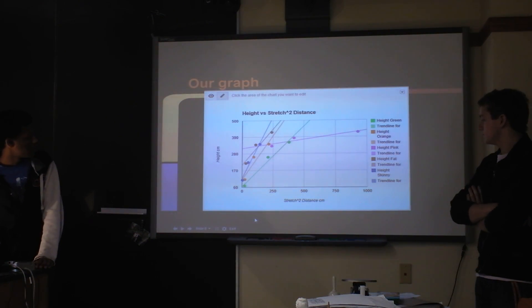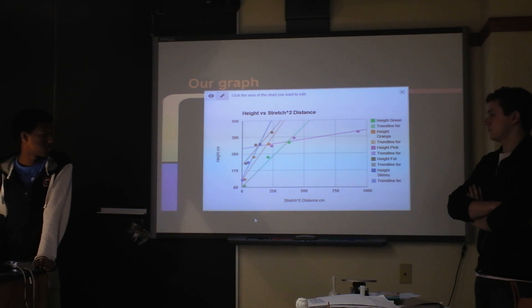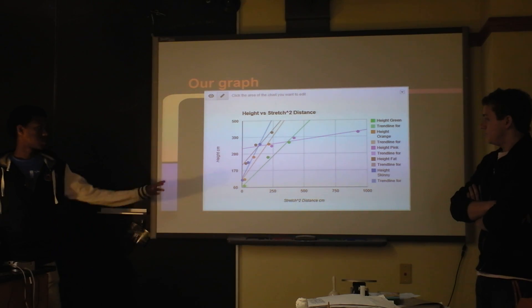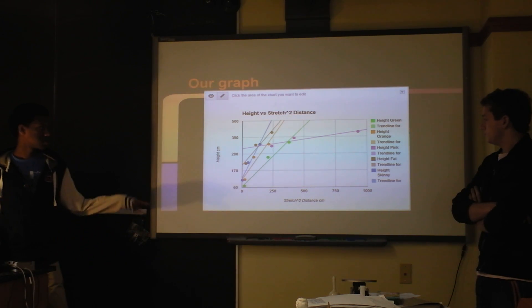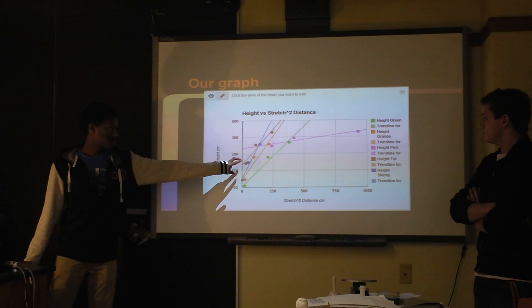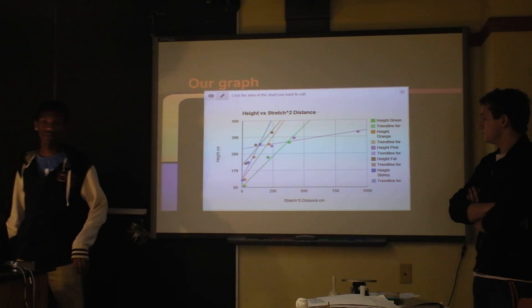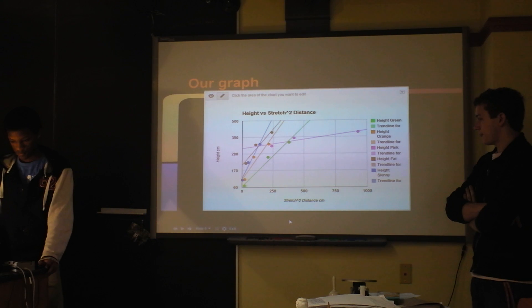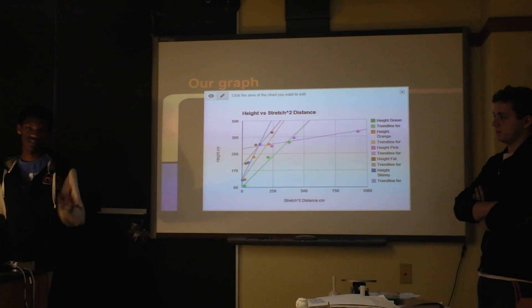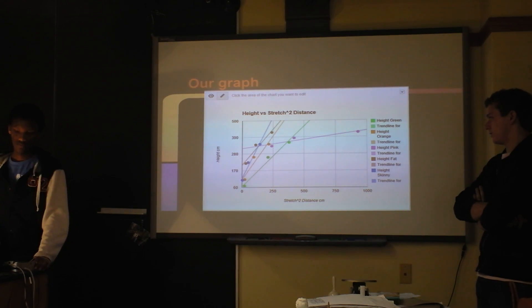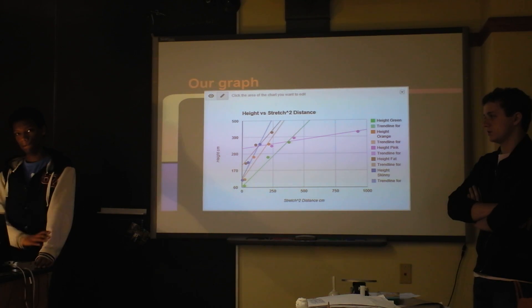So this is our graph of the height shot up over the distance stretched squared, because in the equation the distance is squared. Each color is the rubber band: pink is pink, green is green, and then fat and skinny we had to make blue and brown even though they were both yellow. The pink one is so different because it had the highest spring constant, so it went the furthest compared to how far it was stretched.